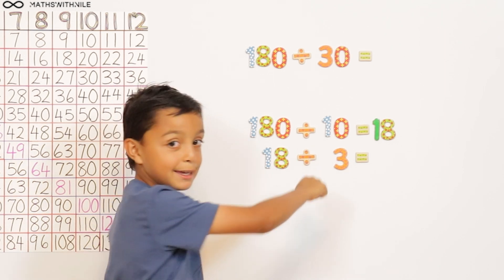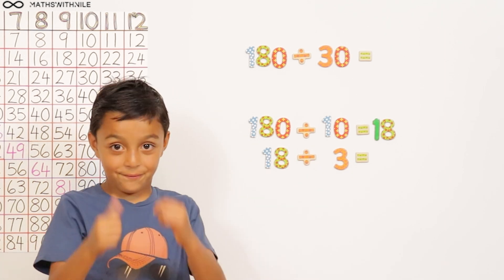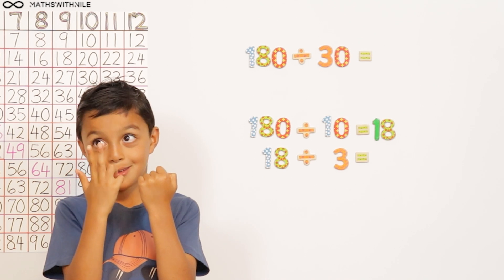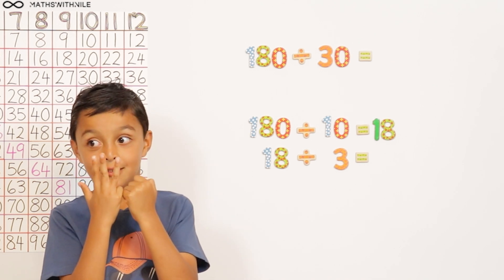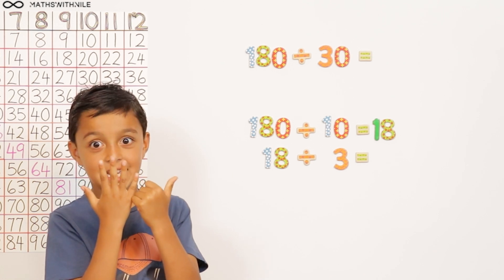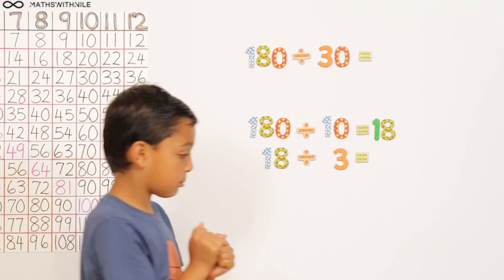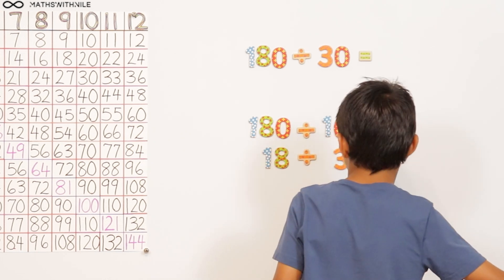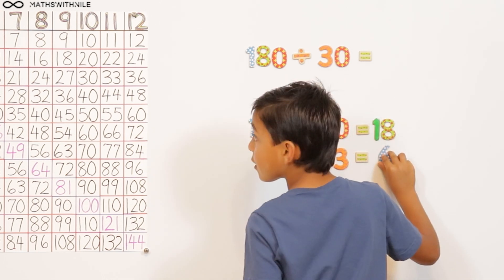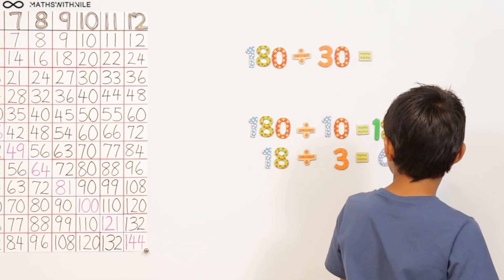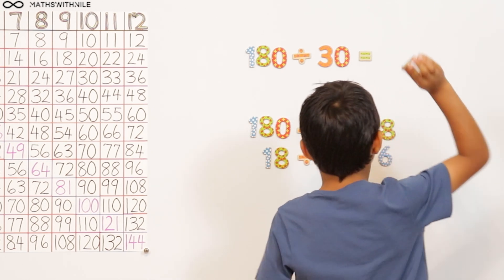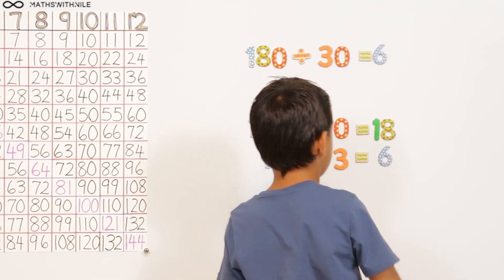180 divided by 10 equals 18. 180 divided by 10 equals 18. So 18 divided by 3 equals 3, 6, 9, 12, 15, 18, 6. Okay. And remember you have your times table grid next to you as well if that can help. Oh yes. Okay. So what is 180 divided by 30? 6. Very good.